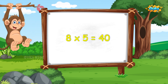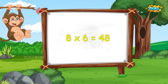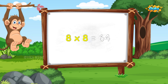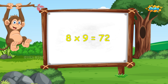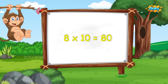8 5s are 40, 8 5s are 40, 8 6s are 48, 8 6s are 48, 8 7s are 56, 8 8s are 64, 8 8s are 64, 8 9s are 72, 8 9s are 72, 8 10s are 80.